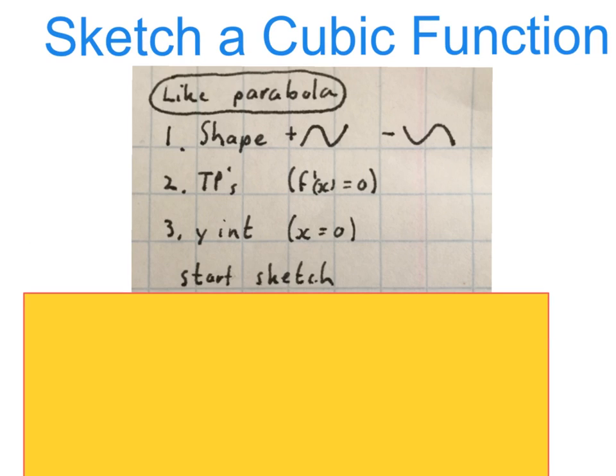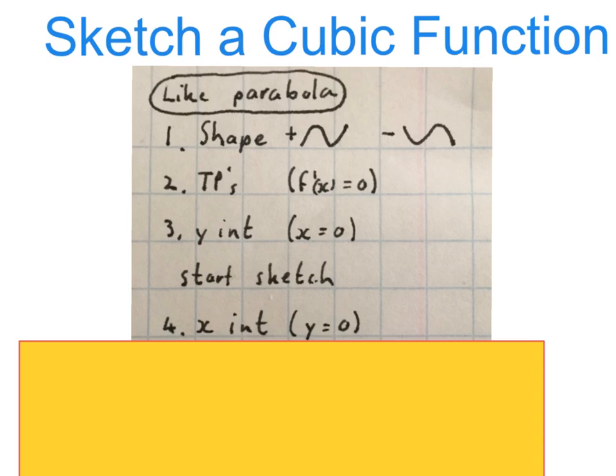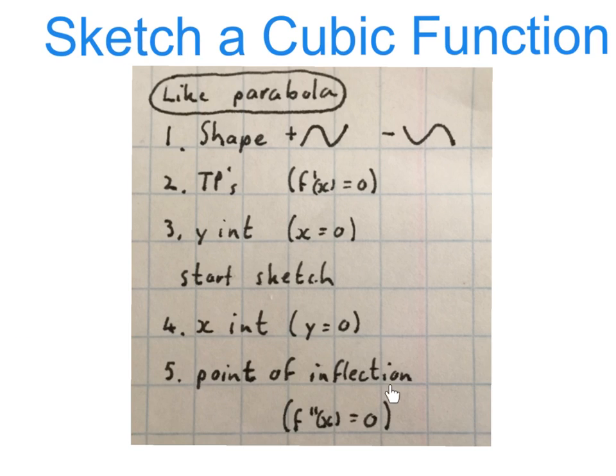Then we're going to work out our y-intercept by making x zero. Then I usually start my sketch. Then I work out my x-intercept by making y zero. Then I work out my point of inflection where my second derivative is equal to zero.